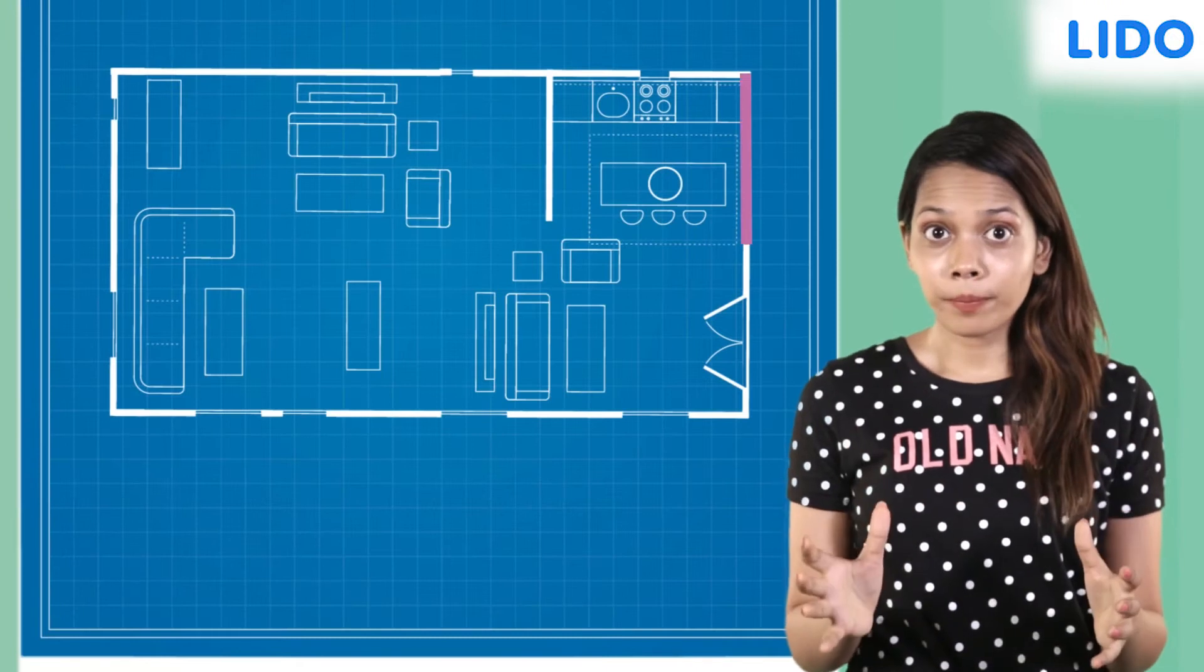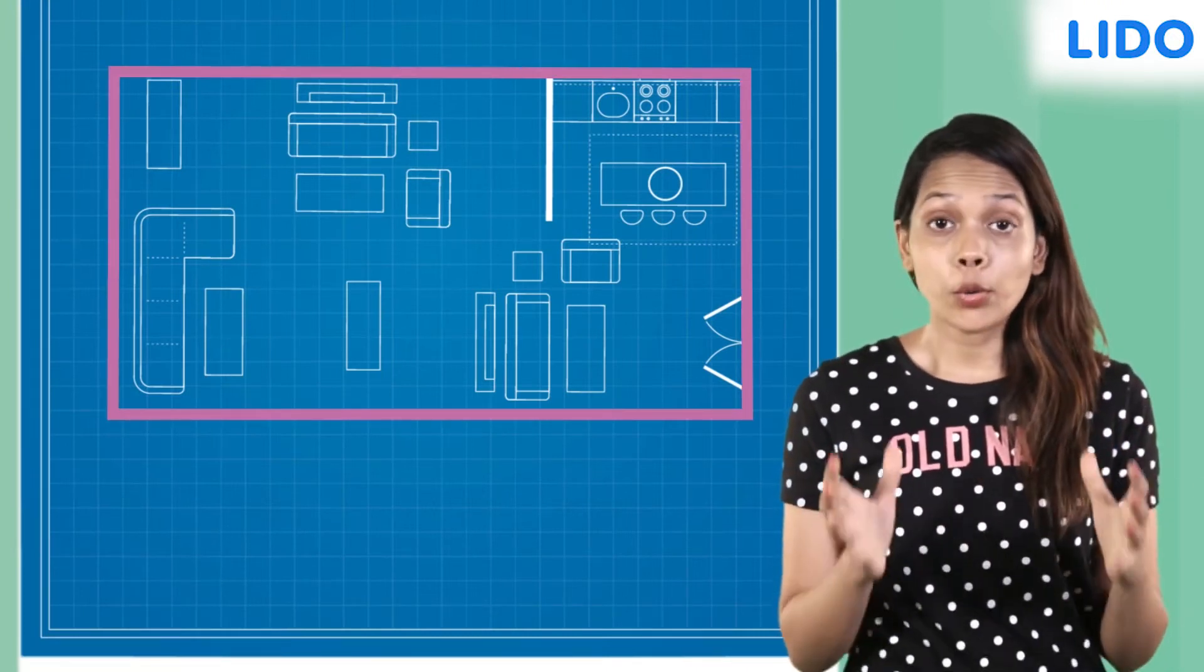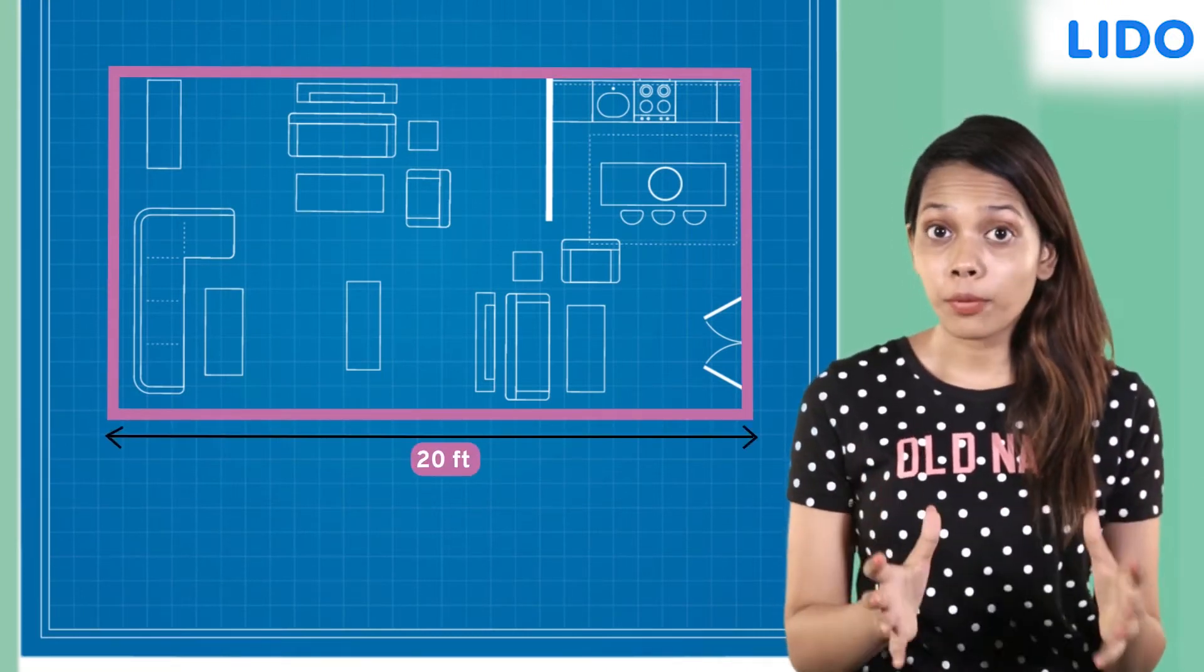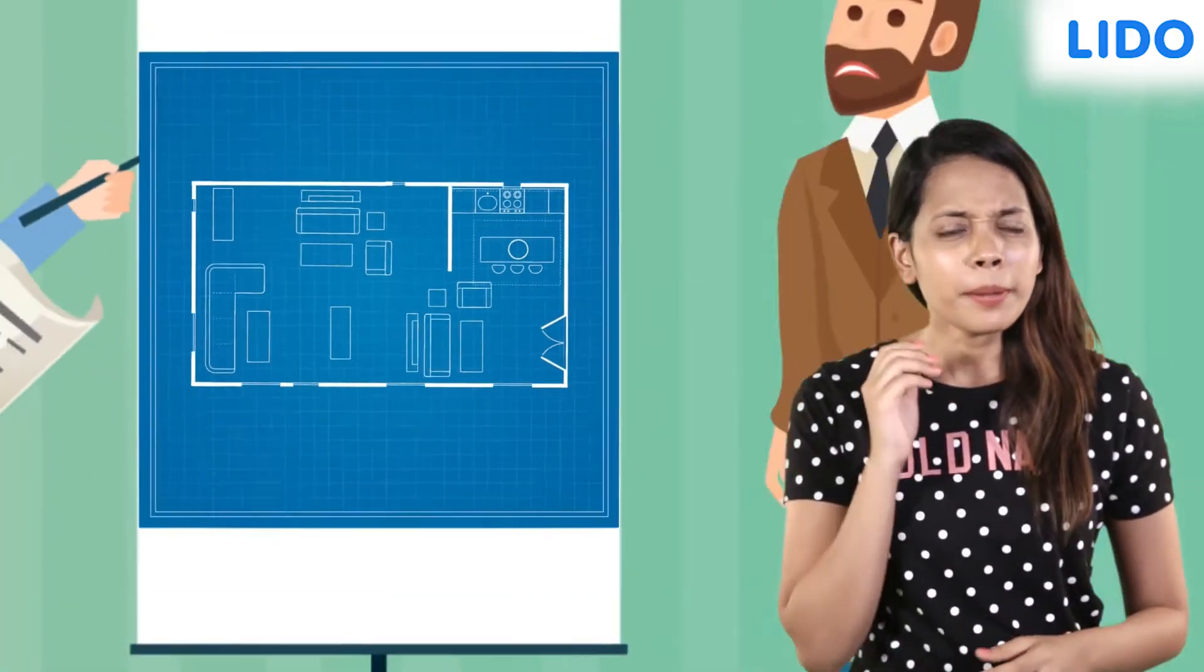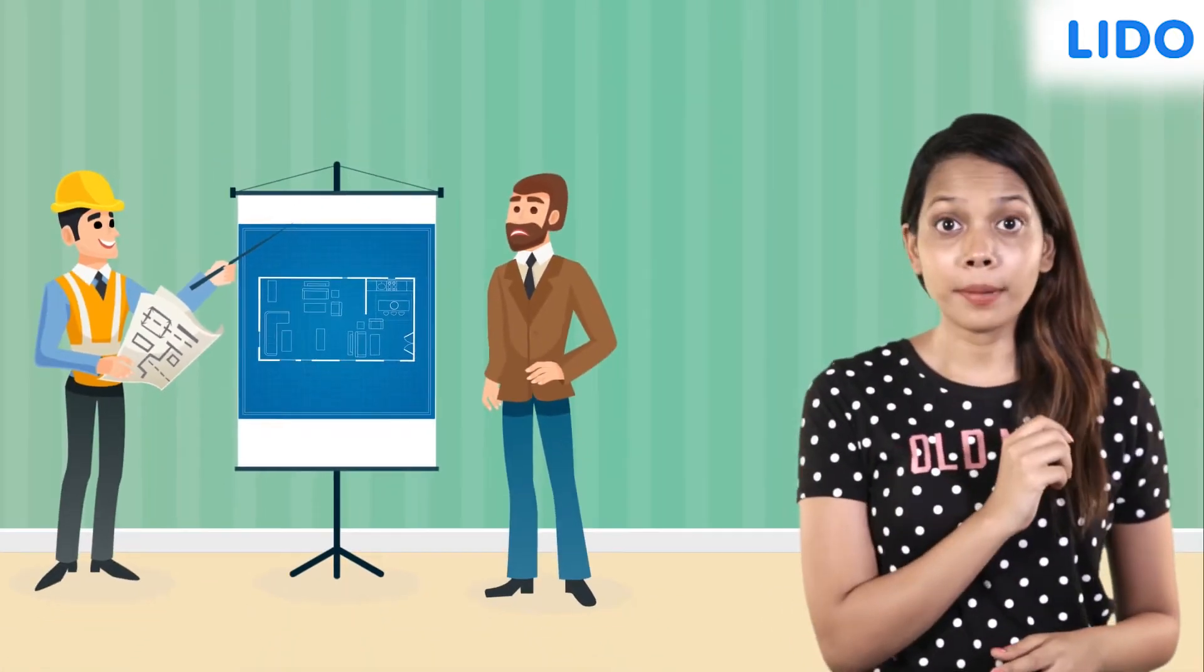This is the plan of the living room in the form of a rectangle whose length is 20 feet and breadth is 12 feet. But Mr. Mehta is not happy with the plan.